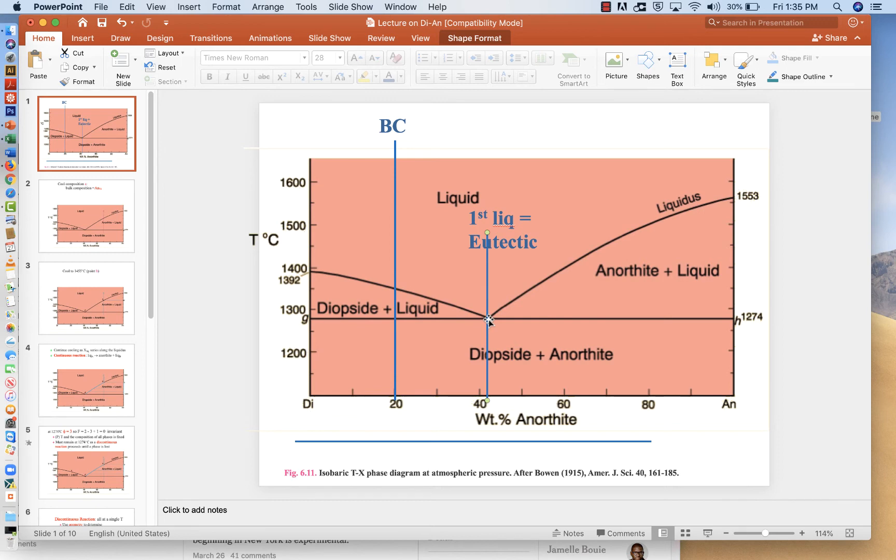Now, diopside will also melt at the same time, just not as a faster rate. When all the anorthite's gone, there's only diopside left. And so as we melt diopside, that will push the liquid back towards the diopside composition. But it also allows us to leave the eutectic.